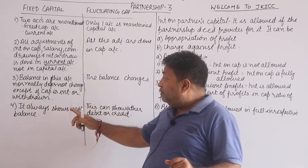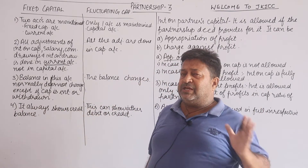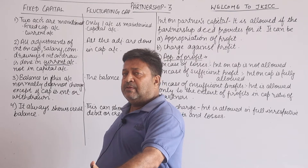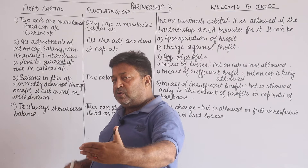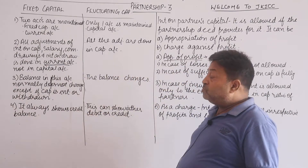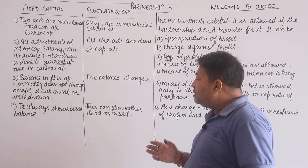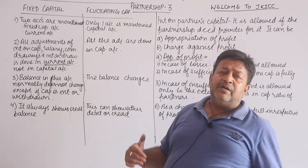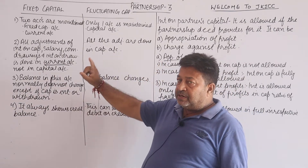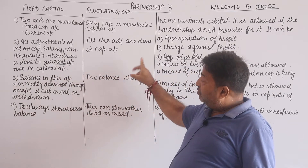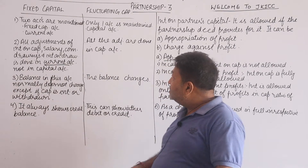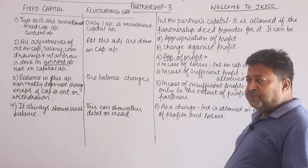In fluctuating capital, the balance always changes. In case of fixed capital, it shows a credit balance. With two accounts maintained under fixed capital, all the adjustments are done in the current account. With fluctuating capital, all the adjustments are done in the capital account itself. The balance in fixed capital normally does not change and always shows a credit balance, while in fluctuating capital you can have either a debit balance or a credit balance.